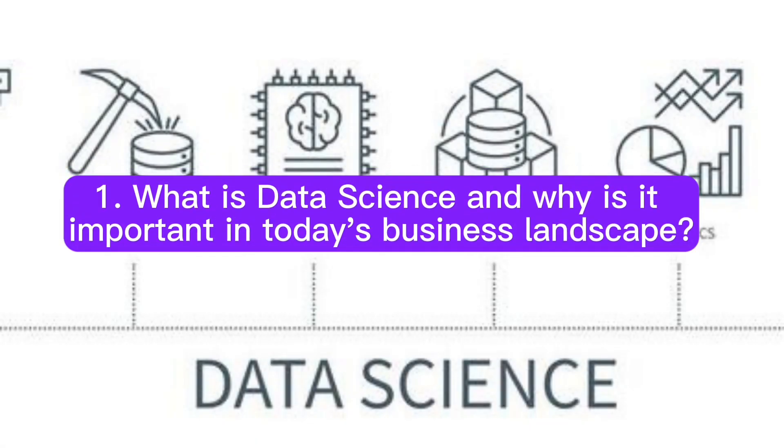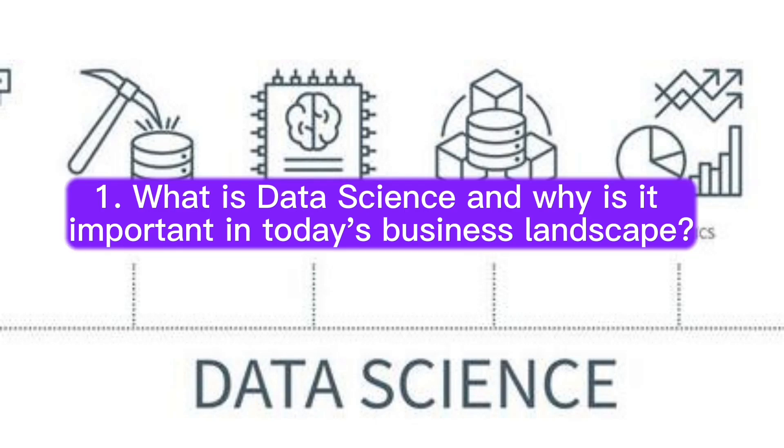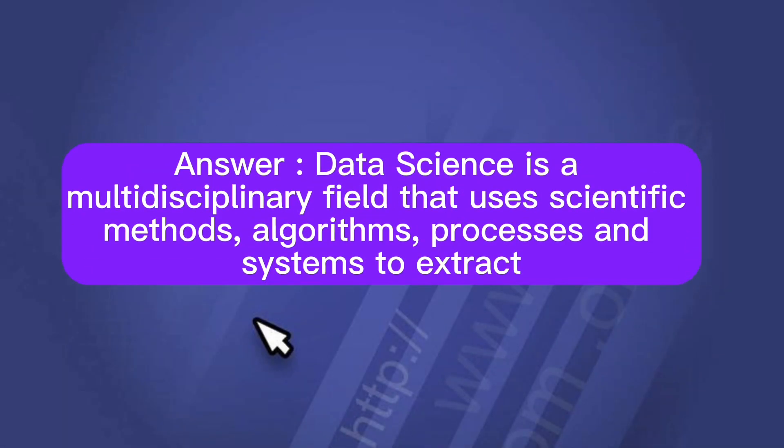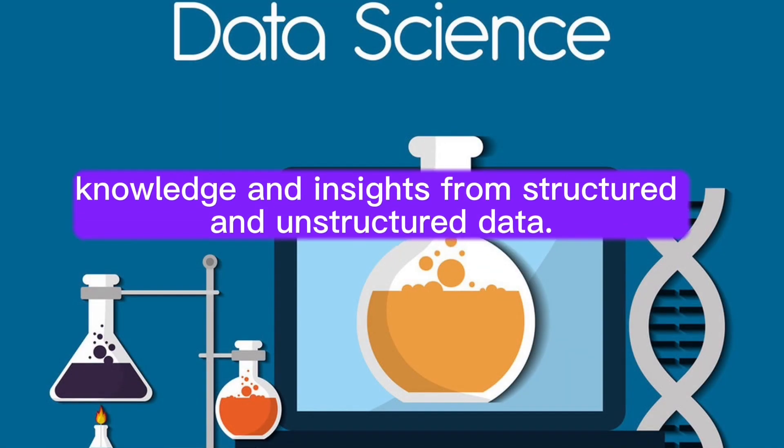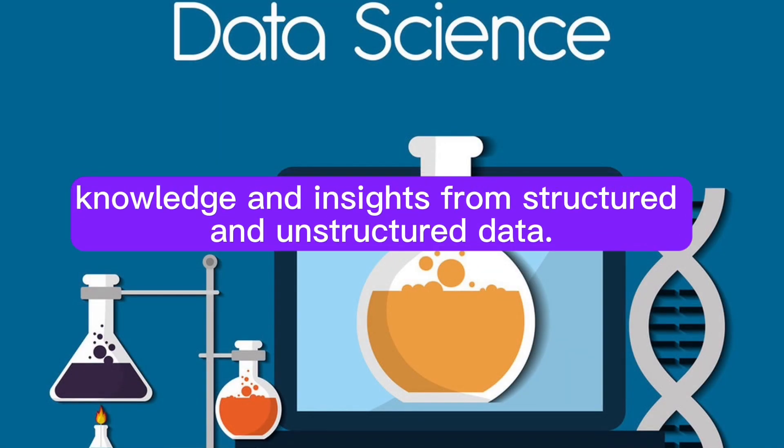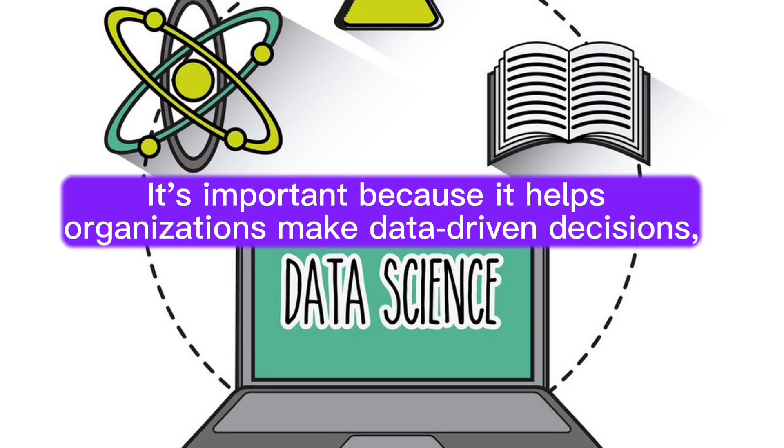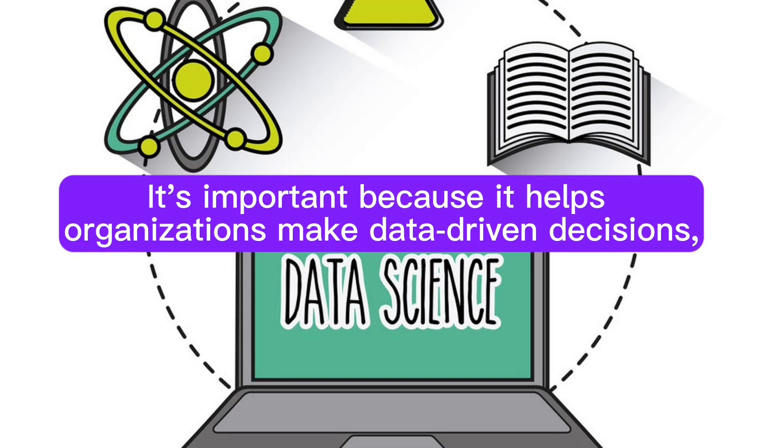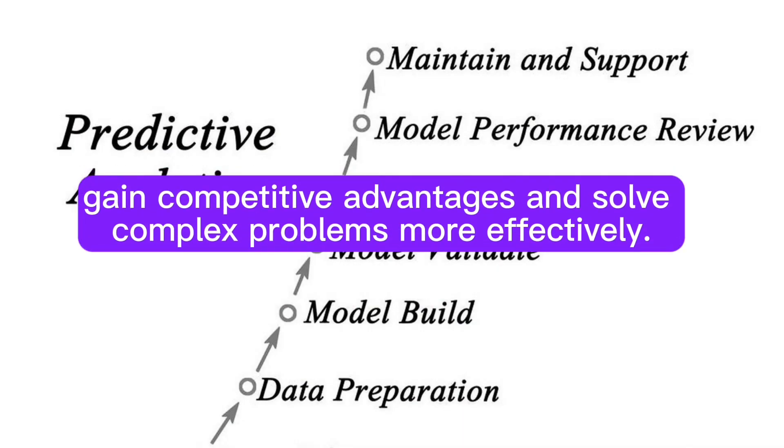Question 1: What is data science and why is it important in today's business landscape? Answer: Data science is a multidisciplinary field that uses scientific methods, algorithms, processes, and systems to extract knowledge and insights from structured and unstructured data. It's important because it helps organizations make data-driven decisions, gain competitive advantages, and solve complex problems more effectively.